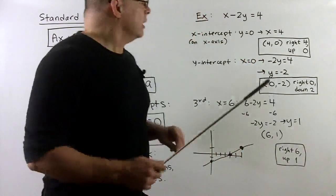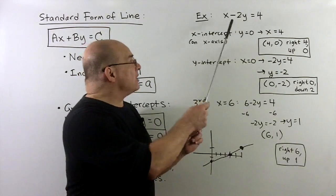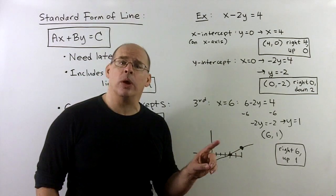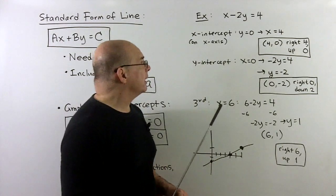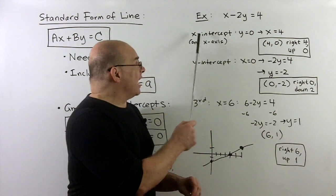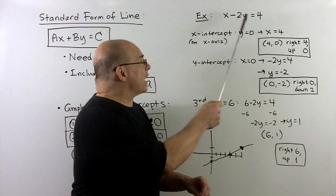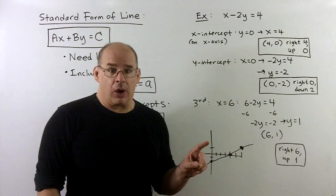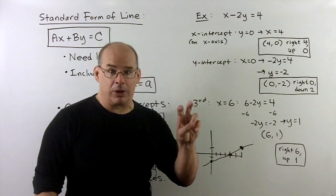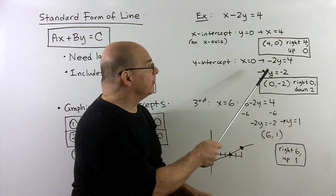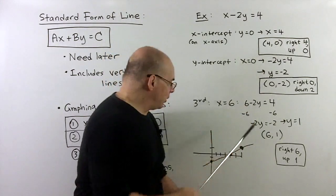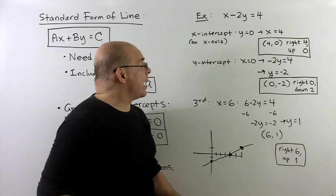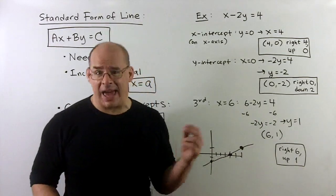Let's look at an example: the line x minus 2y equals 4. For the x-intercept, set y equal to 0, which directly gives x equal to 4. So that's the point (4, 0) — we go right 4, up 0. This point is on the x-axis as promised.